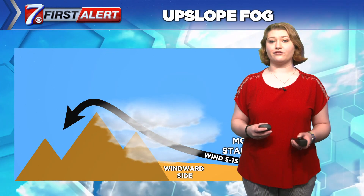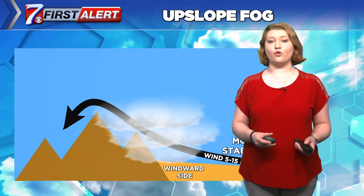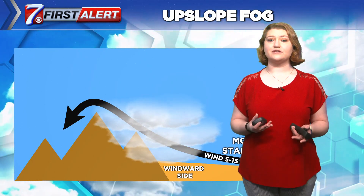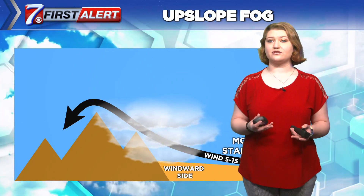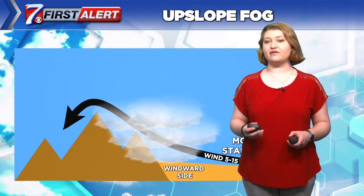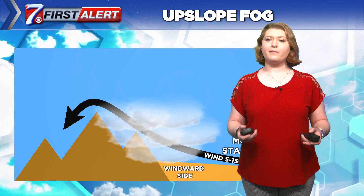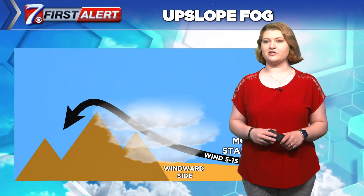There are two ways that upslope fog can form. The first way is that moist, stable surface air moves up sloping terrain. Surface wind of 5 to 15 knots, or about 5 to 20 miles per hour, is favorable.